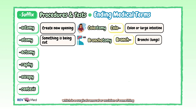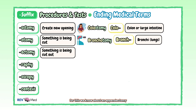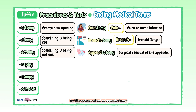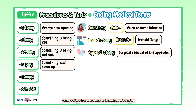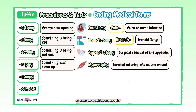Moving on to "-ectomy", which is a surgical removal or excision of something. For this, we know about an appendectomy, which is the removal of the appendix. "-Rrhaphy" refers to a procedure or technique of suturing or repairing a structure, such as tissues or organs. An example would be myorrhaphy, which is a surgical suturing of a muscle wound.